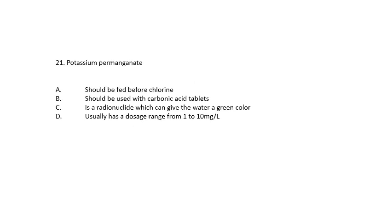Question 21. Potassium permanganate should be fed before chlorine, should be used with carbonic acid tablets, is a radionuclide which can give the water a green color, or usually has a dose range between 1 and 10 mg per liter. It should be fed before chlorine.